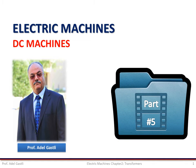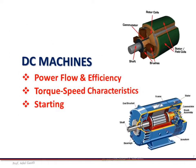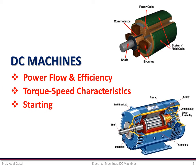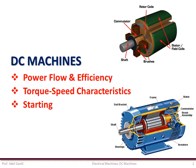This is Adel Gasly. I'm going to present part 5 of the chapter about DC machines. In this part I will cover the power flow and efficiency, then the torque-speed characteristics of different DC machines, and finally the starting issues of DC machines.